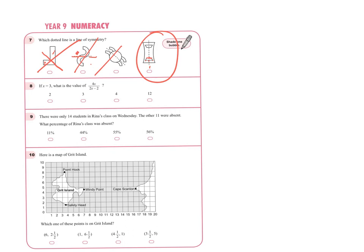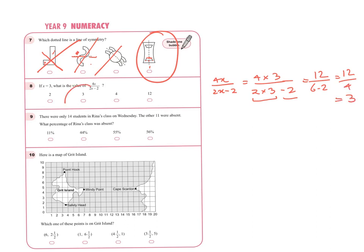Question 8: if x equals 3, what is the value of 4x over 2x take away 2? Substituting: 4 times 3 is 12, and 2 times 3 is 6. Do multiplication first, so it becomes 12 divided by 6, take away 2 — that is 2 take away 2, wait — 12 divided by 6 is 2, take away 2... giving the answer 3. Wait — 12 over 6 take away 2 equals 2 minus... the answer is 3.